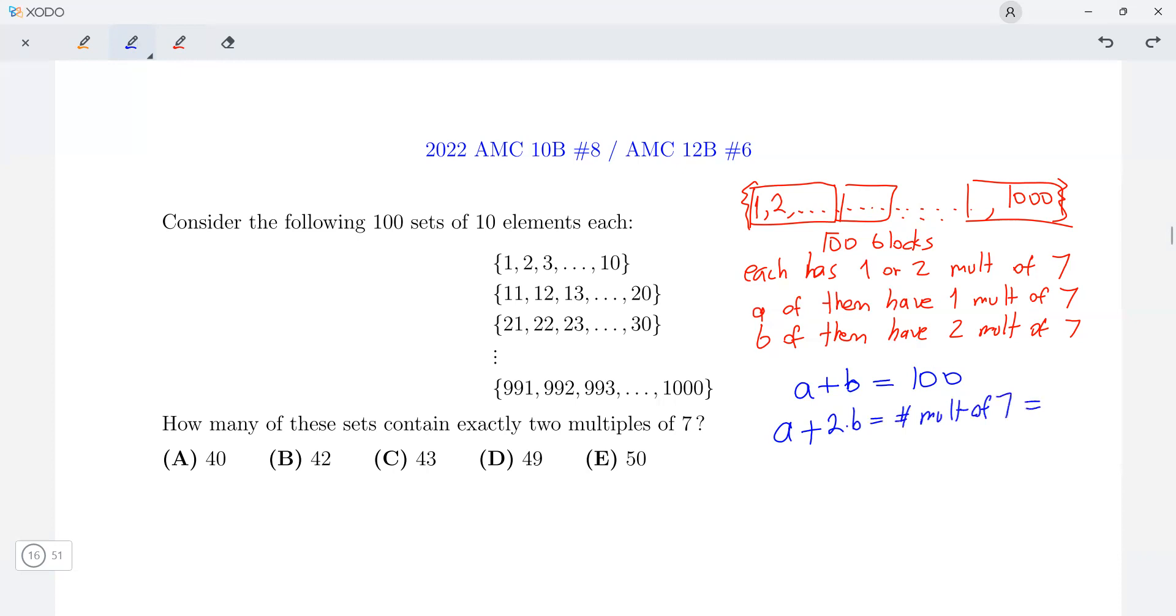So side note, it's good to note that 1001 equals 7 times 11 times 13, and so this is 7 times 143. So the previous 142 multiples of 7 are in the interval 1 to 1000.